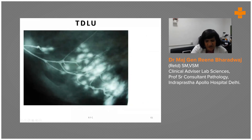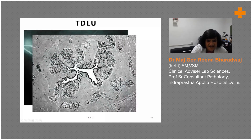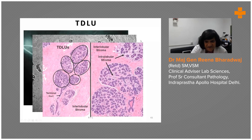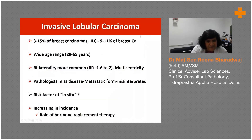This is how a TDLU looks like on mammography, and this is how we see it in normal histology. When we define the so-called acini within the lobules, you have a terminal duct, interlobular stroma, intralobular stroma, and interlobular stroma. You should be clear about these definitions.